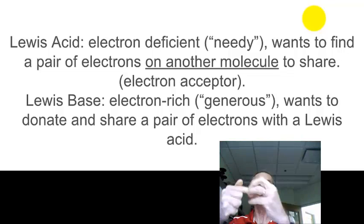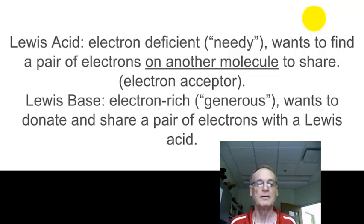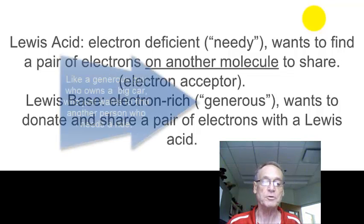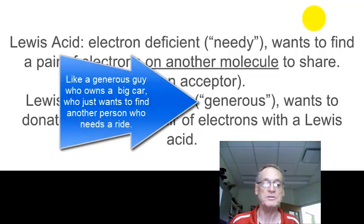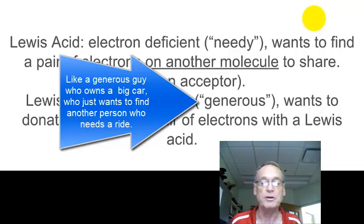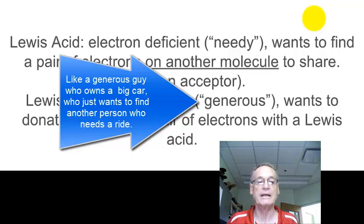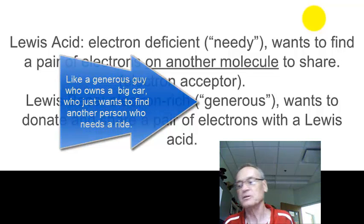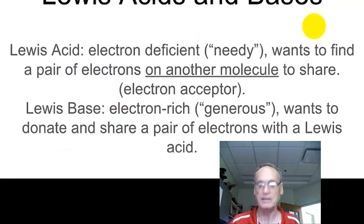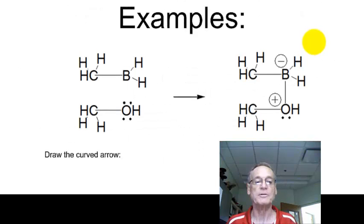So: Lewis base, Lewis acid. The Lewis base is electron-rich, or generous — it wants to donate a pair of electrons and share it with a Lewis acid. The Lewis base has a pair that it wants to share with somebody else, and the Lewis acid wants to find a pair that it can share with somebody else.